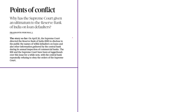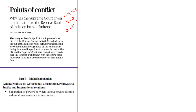The first article titled 'Points of Conflict' appeared on page 14 of Chennai and Delhi editions, page 16 in Bengaluru edition, and page 12 of Thiruvananthapuram edition. The contents of this article are relevant for mains preparation in GS Paper 2 under separation of powers between various organs, dispute redressal mechanisms and institutions.